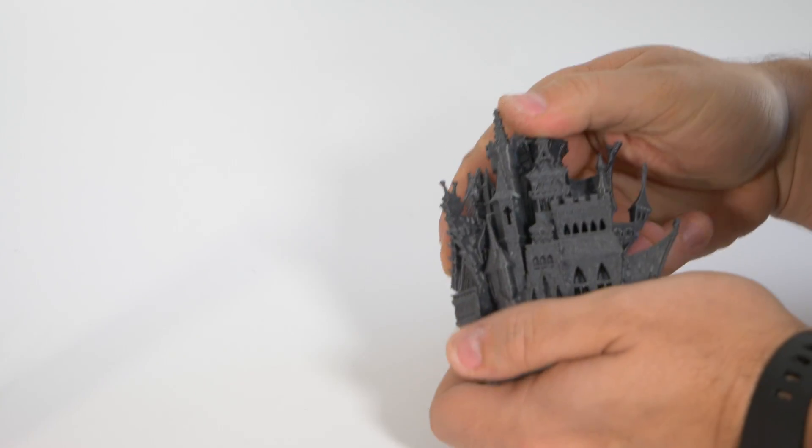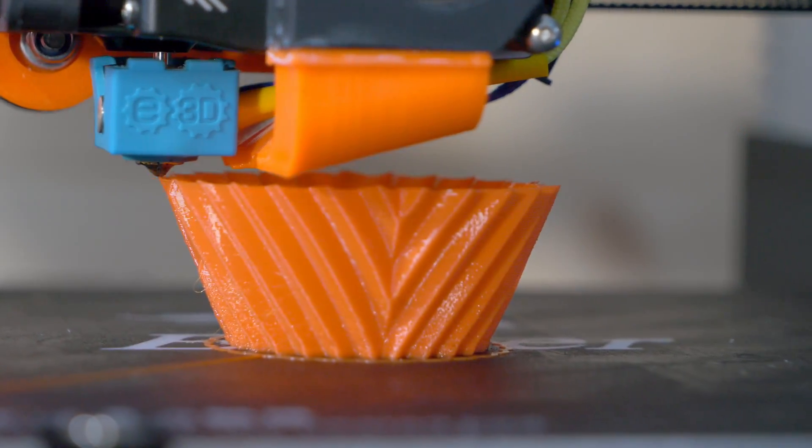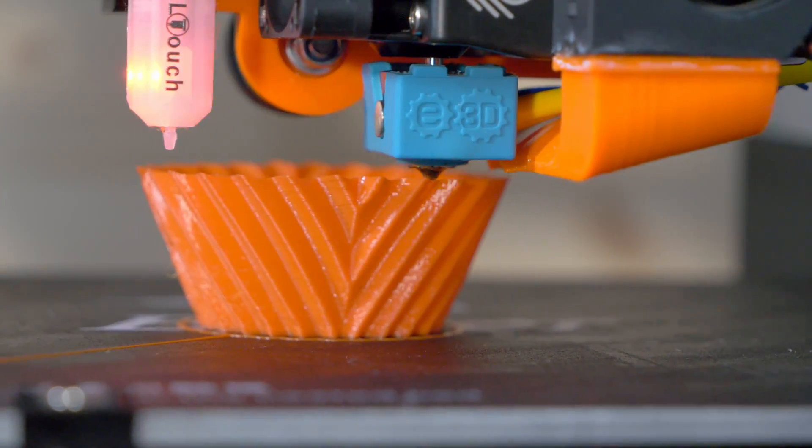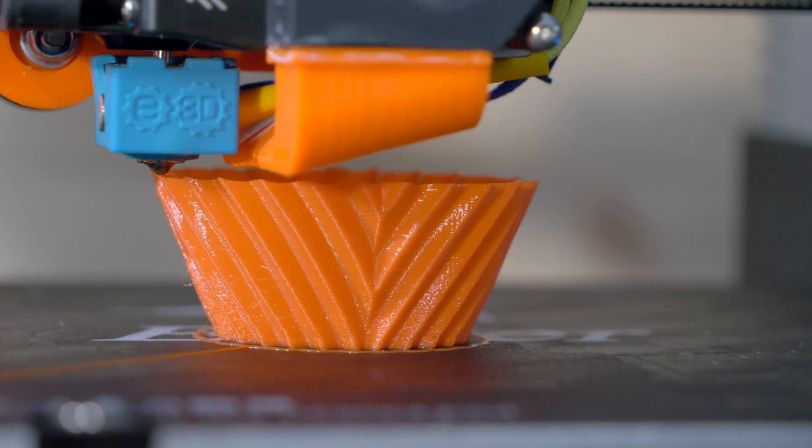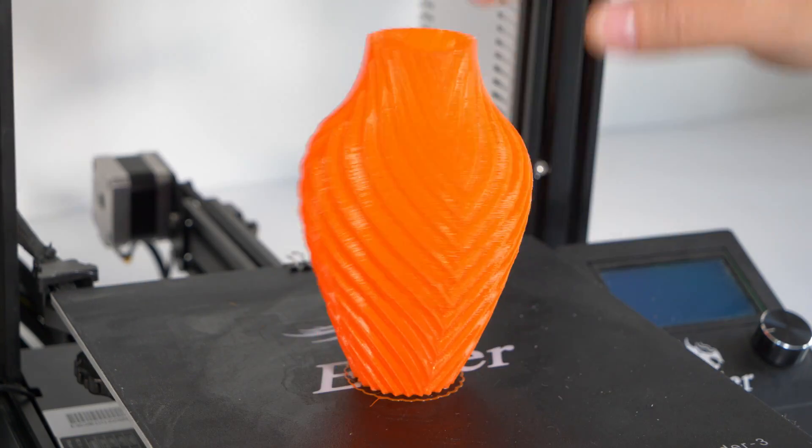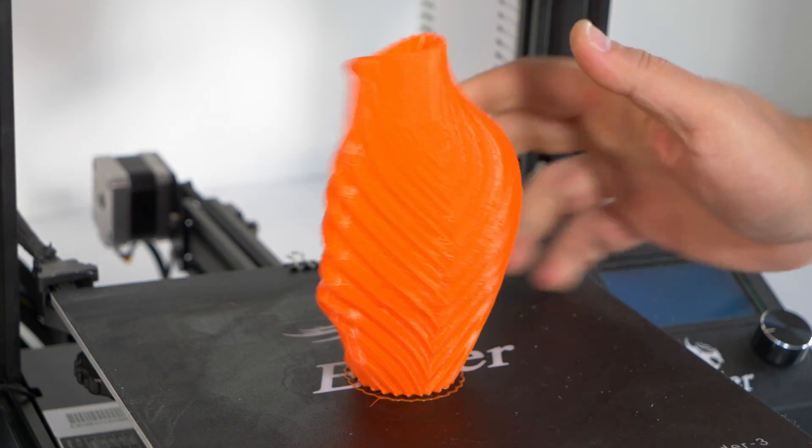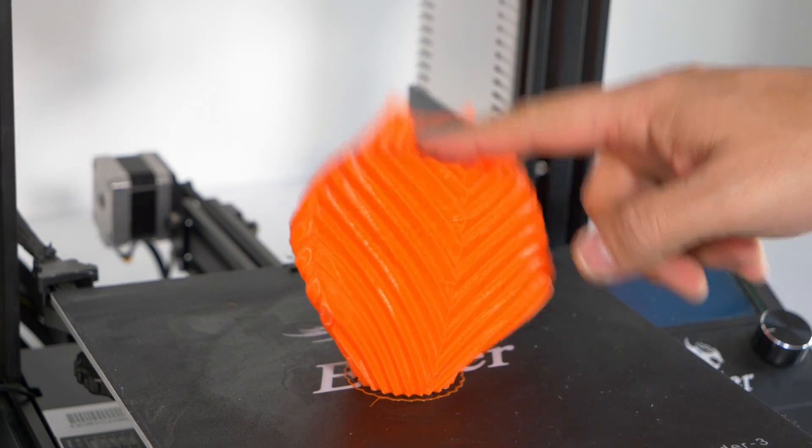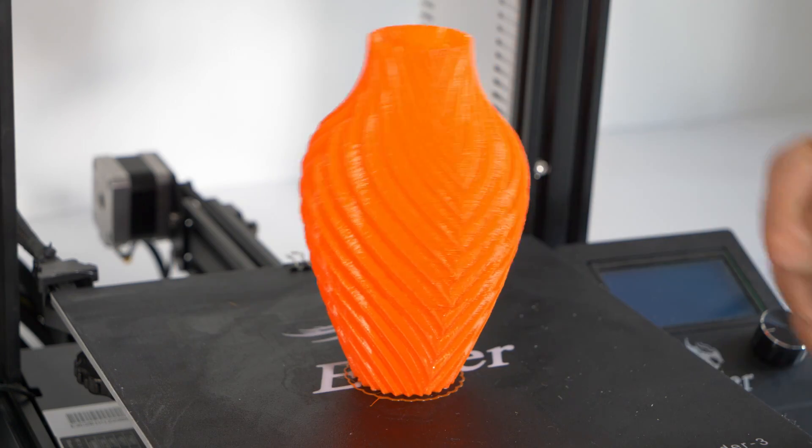Then finally, also just for fun, I printed a vase in vase mode at 100 millimeters a second. Yes, the quality is pretty much abysmal. It is 100 millimeters a second ninja flex in vase mode, but it printed nonetheless. And it also turned out to be enormously satisfying because now I have a vase that I can stay punching and squishing as it's my stress vase.